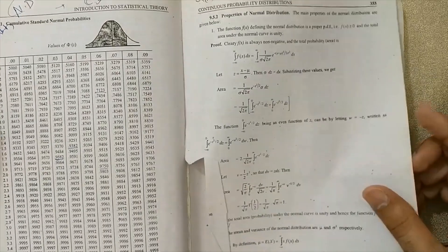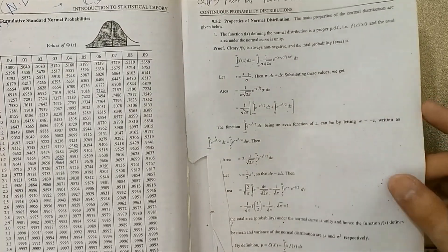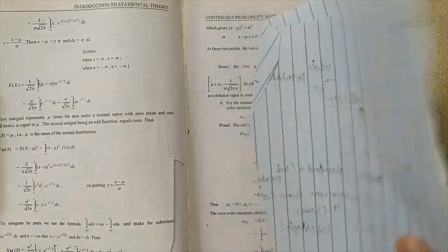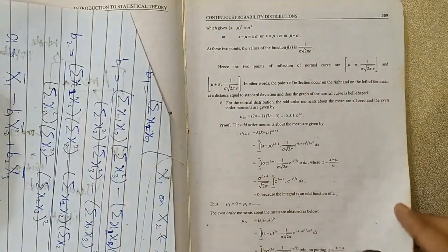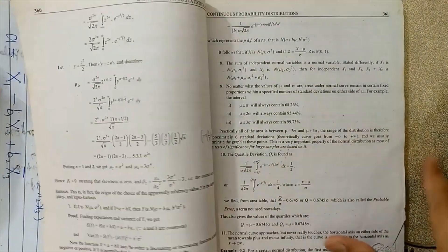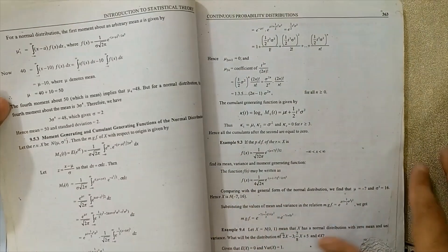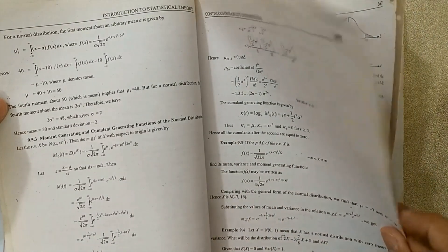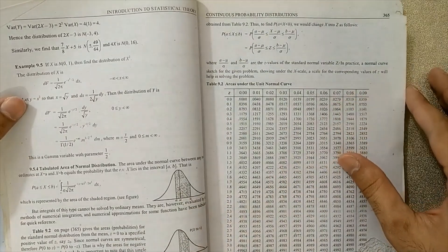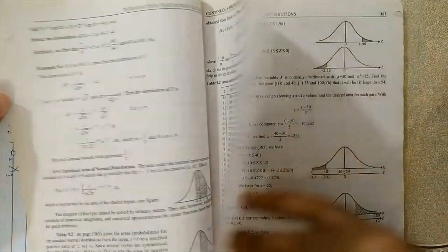This is the table of cumulative standard distribution. This table is very important. This is the table for areas and the normal coverage. This table is very important.